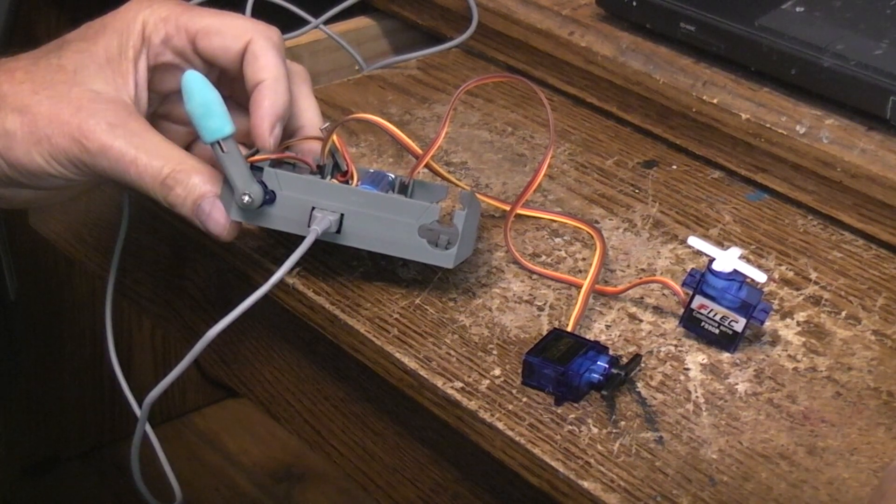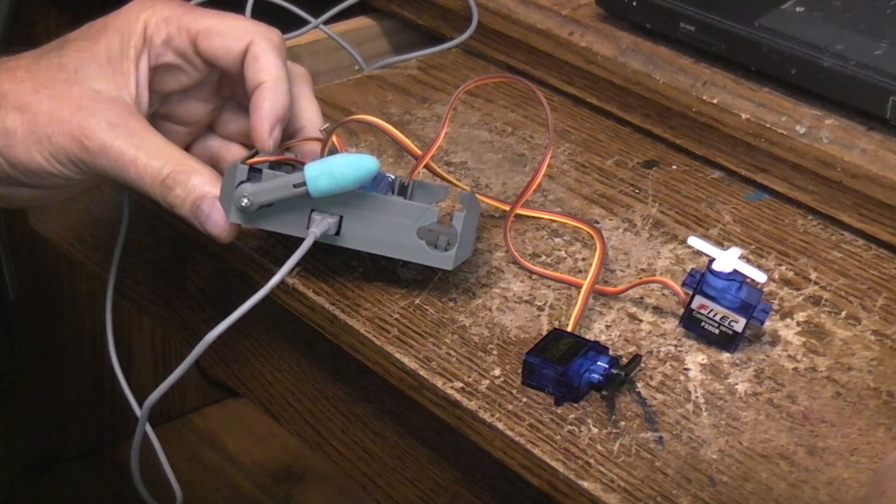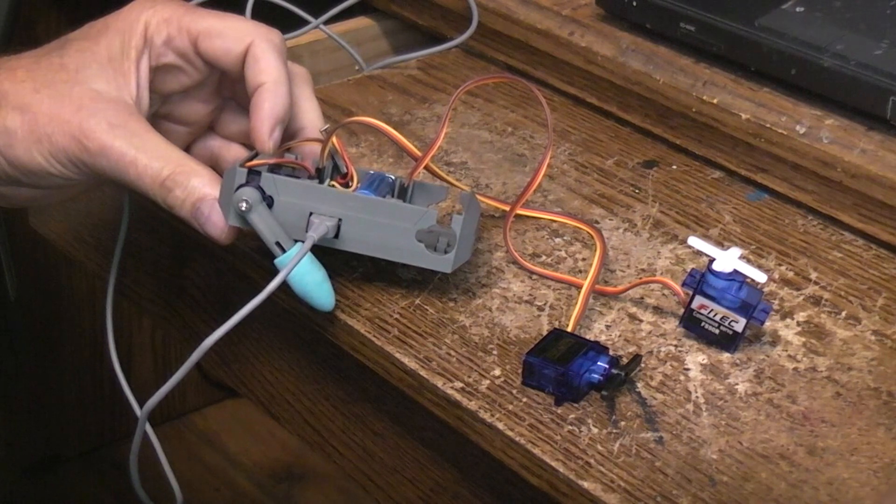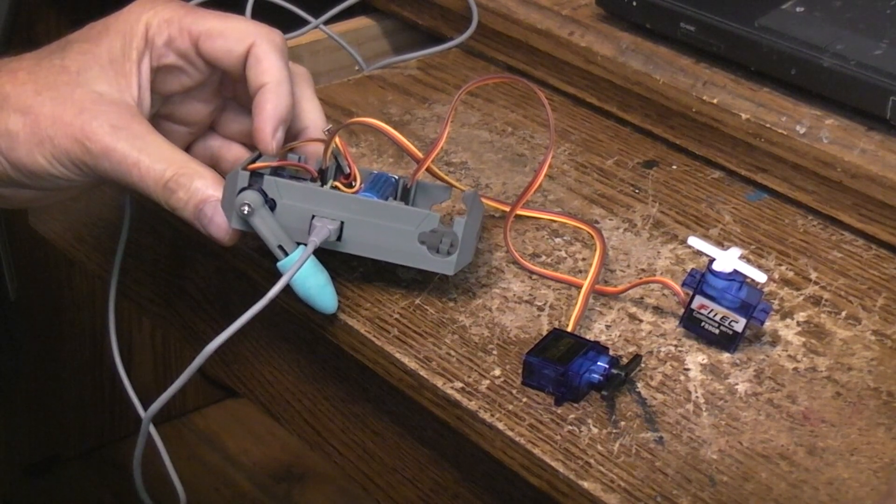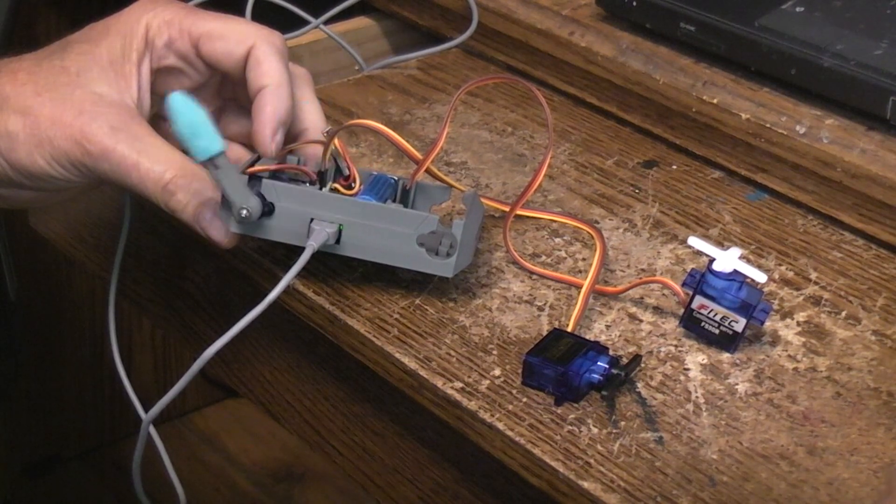That would be your 180 right there because you can see it's halfway between there and there, but it can go all the way to here, which is going to be perfect for this KD2 project because you need to be able to go back that far in order to do the flips.